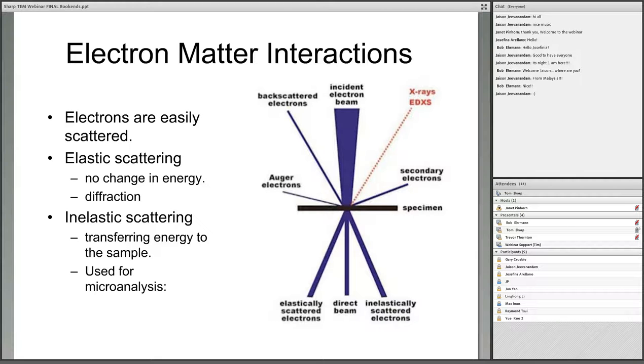The reason these microscopes are so powerful is because electrons interact very strongly with matter. This is just a cartoon showing a very thin specimen with an electron beam coming down from the top and going through that specimen. The electrons are scattered in two different ways. The first is elastic scattering, which means no change in the energy. This is mostly what we use for diffraction.